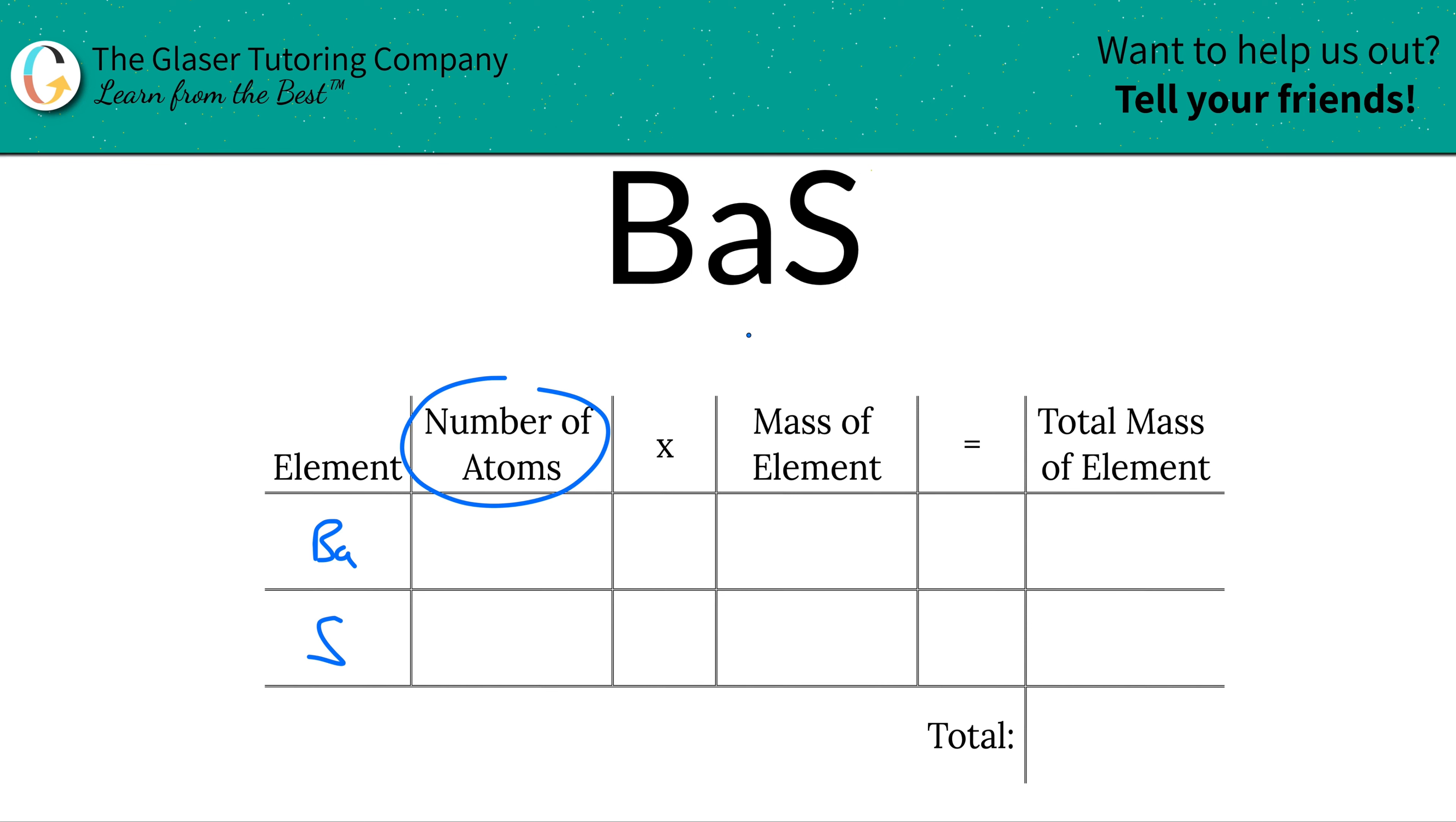Next thing is to write down the number of atoms of each element in that compound. If you look at barium sulfide there, there is an invisible one on the bottom of barium, as well as sulfur. So what that tells us is that there's one atom of each in barium sulfide.